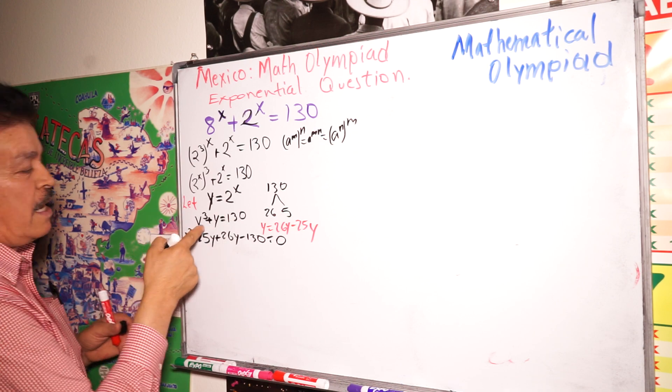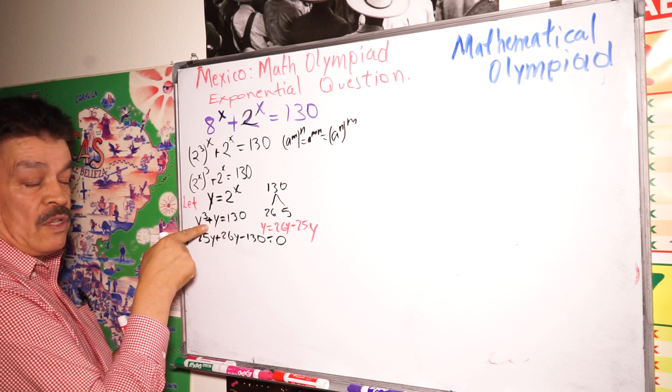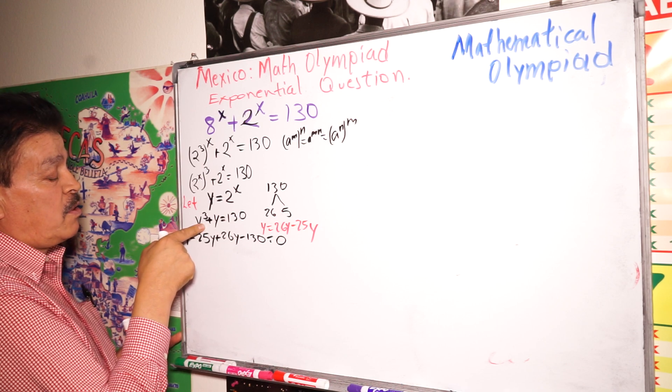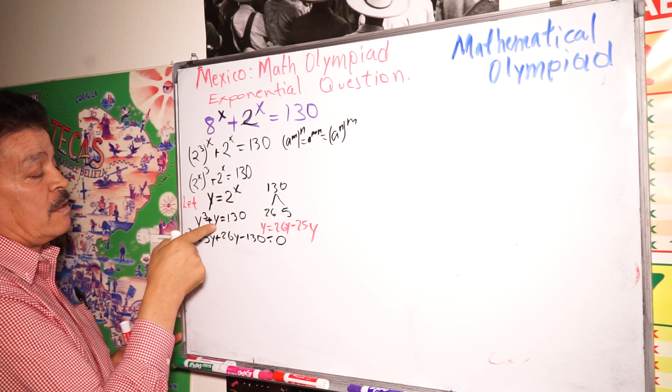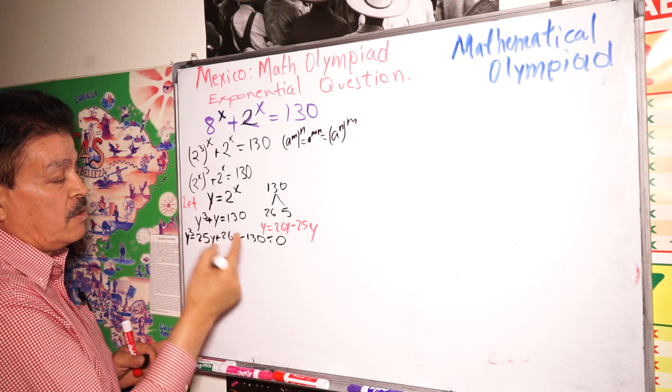Because it's an equation of third degree, we have Y to the third power plus Y minus 130 equals 0.